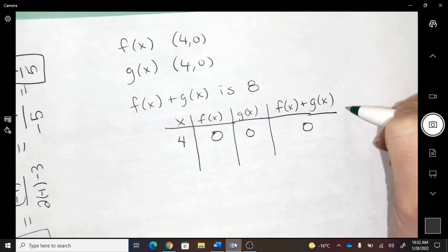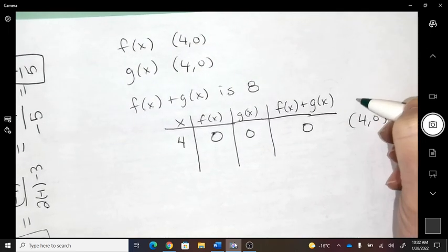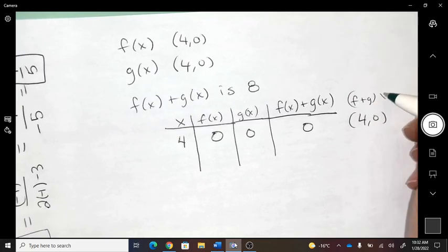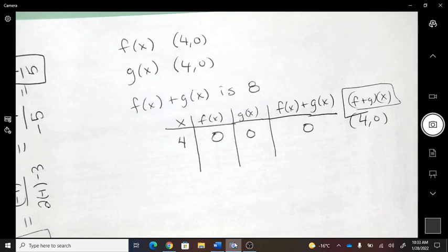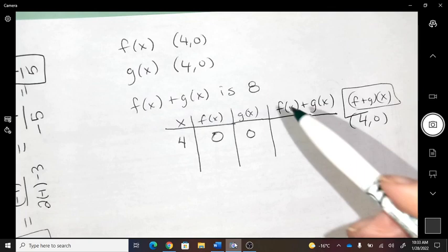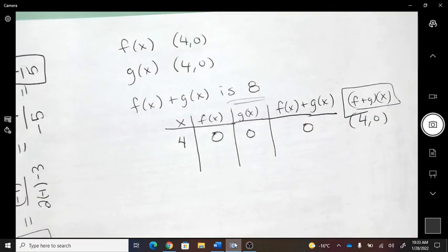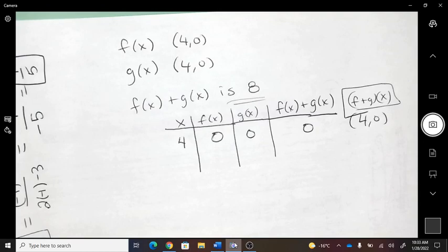Therefore, 4, 0 is on that graph. So is Benjamin right? No. Okay. Why was Benjamin wrong? Because he was adding the x values instead of the y values.